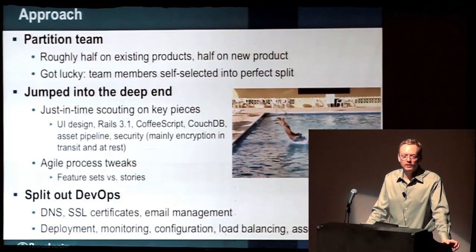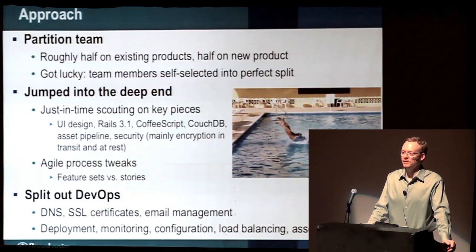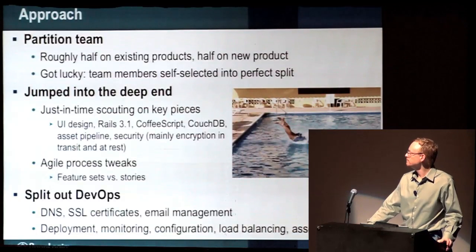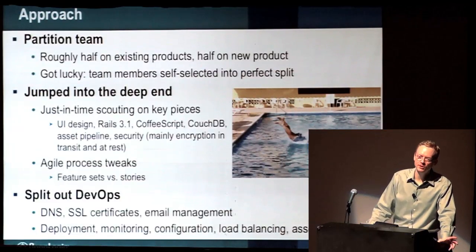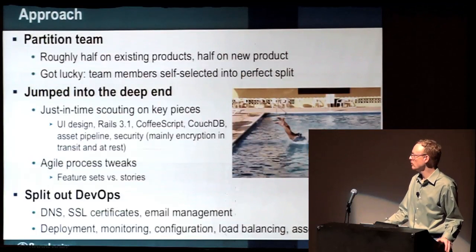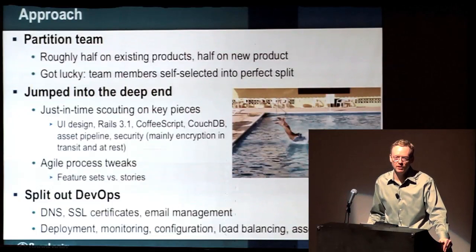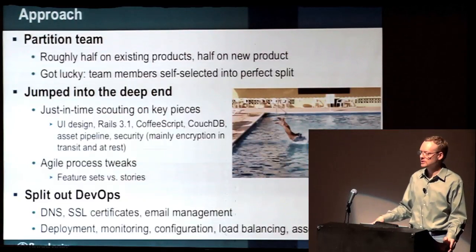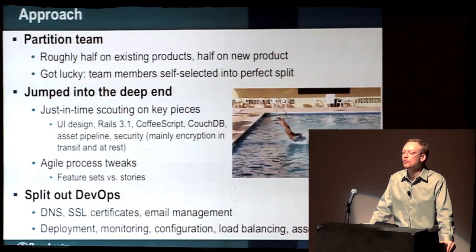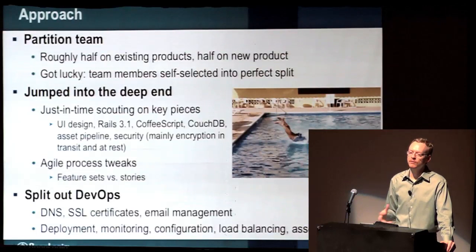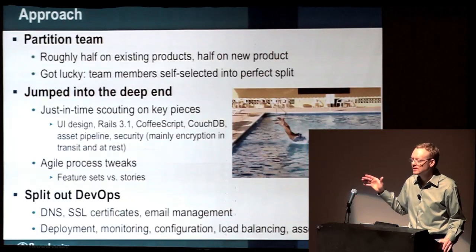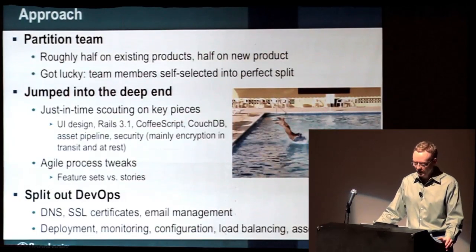We also split out DevOps work — a lot of stuff that has to be done for a product like this that's not directly visible to end users: setting up global DNS, round-robin, SSL certs, how to send email, how to deploy to production, rake scripts to automate things, monitoring configuration. We carved that out into a tiny DevOps team of two part-time people over a couple months to attack those issues, and that's worked quite well.